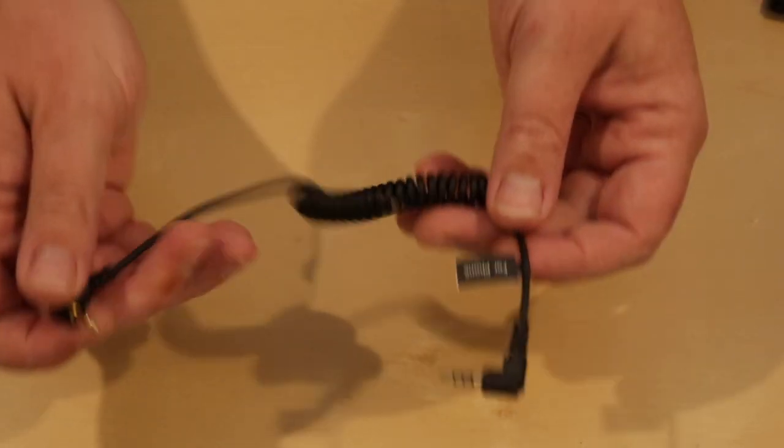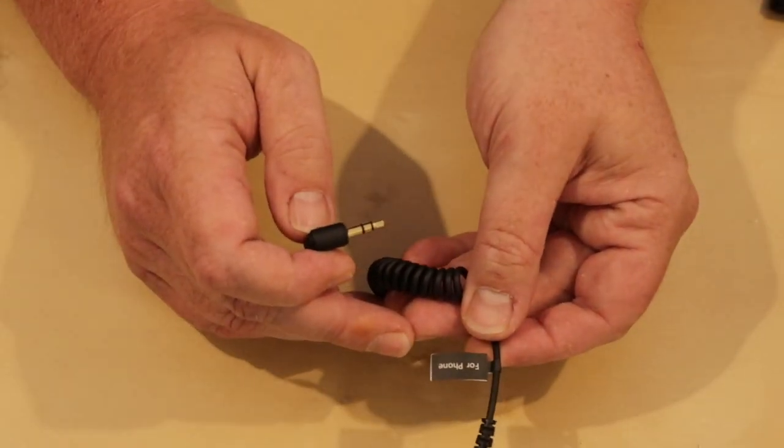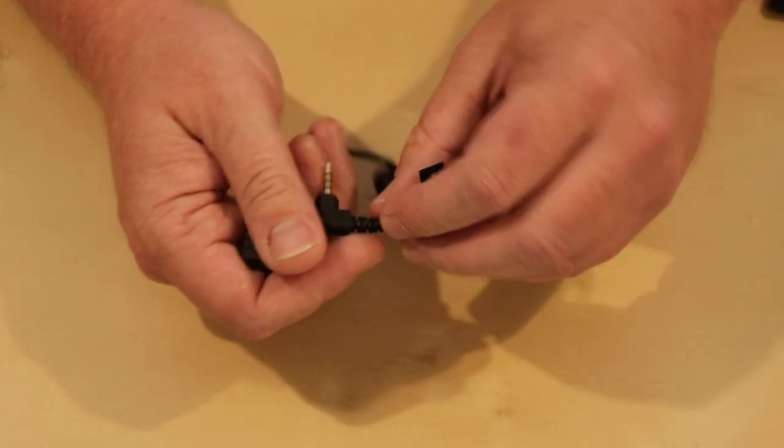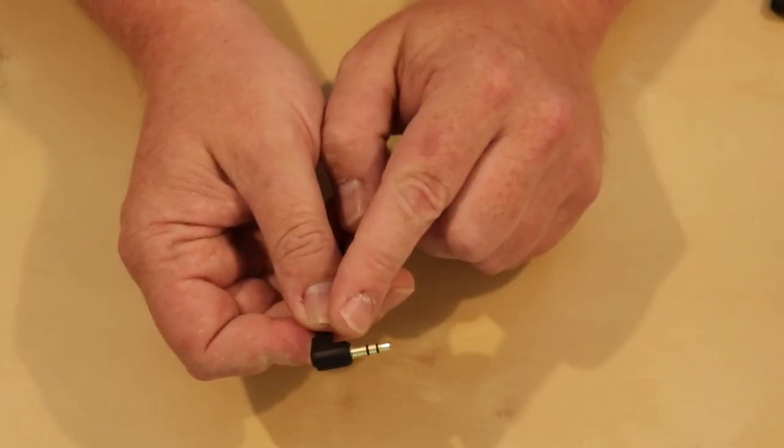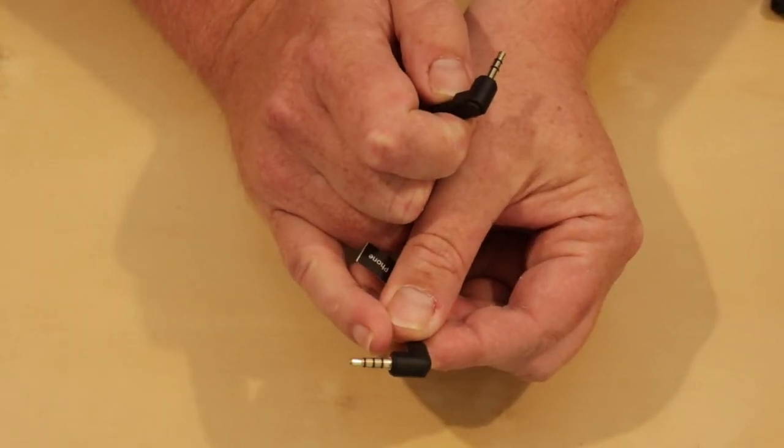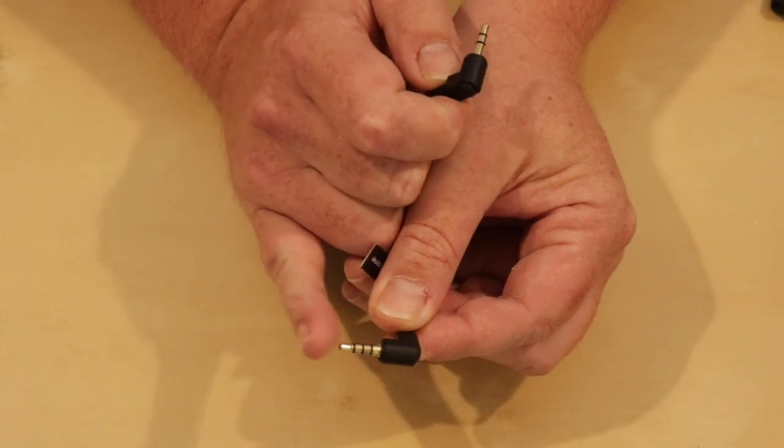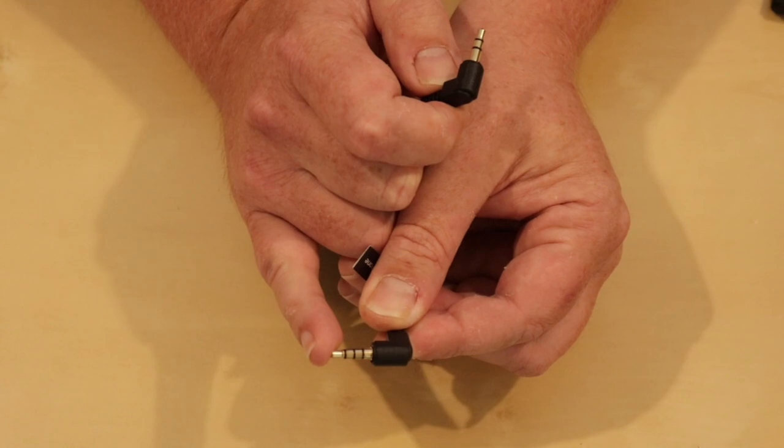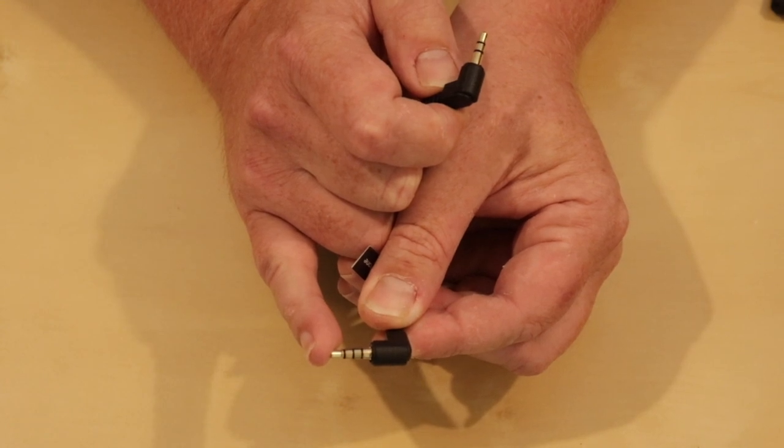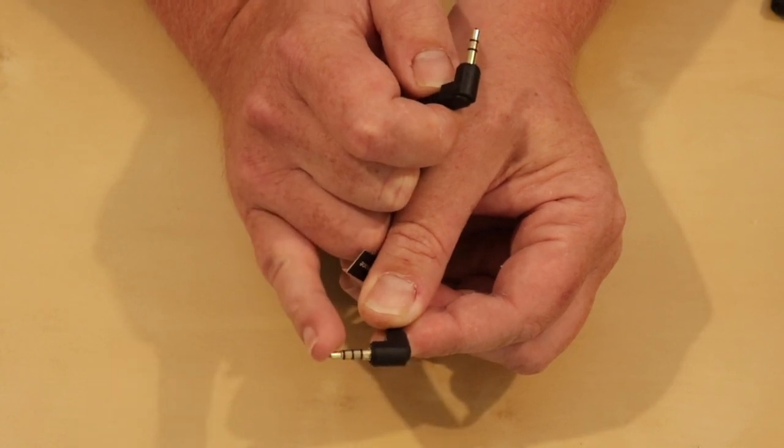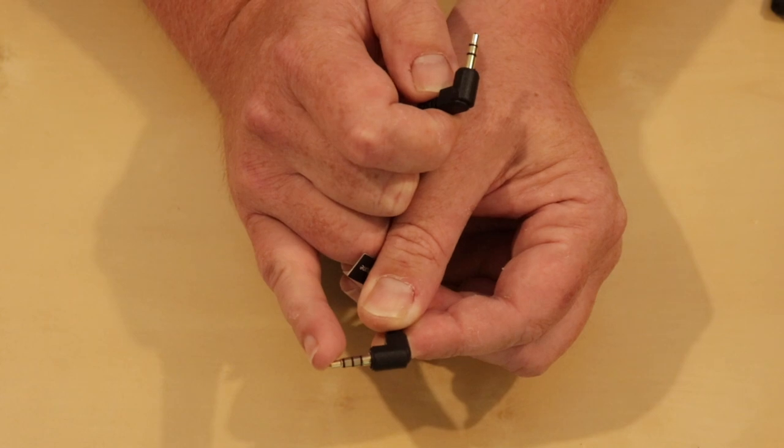And then the second cable, this one says for phone. On one end we have a tip ring sleeve and on the other end we have a tip ring ring sleeve. And this is the end that's designed to go into your smartphone if you do have a 3.5mm socket. If you don't, for example like on the iPhone, you will need to get their lightning to headphone adapter to use that.